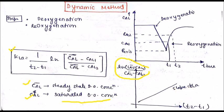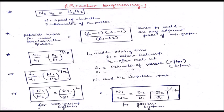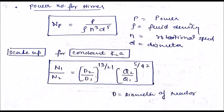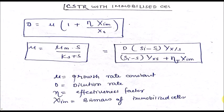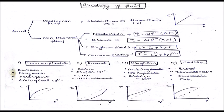Let's come to reactor engineering. In this chapter we discuss scale-up formulas — for mixing time, diameter of vessels, and scale-up from lab scale to large scale. These include formulas for calculating the power number of the stirrer, scale-up for constant kLa, and formulas for when immobilized cells are used in CSTR reactors, where D is the dilution rate and mu is the growth rate constant.